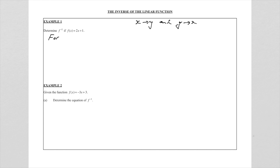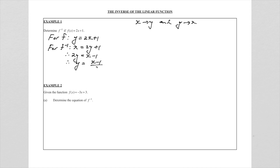So for f, we write it as y = 2x + 1. Then for the inverse of f, we get x = 2y + 1, because we swapped y with x and x with y. Now we manipulate to write this in terms of y: 2y = x − 1, and dividing both sides by two gives y = (x − 1)/2. So the inverse function of f is equal to (x − 1)/2. The inverse of a straight line graph is fairly simple.